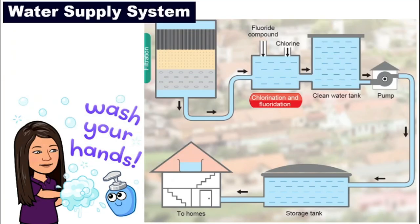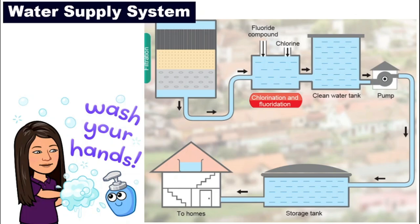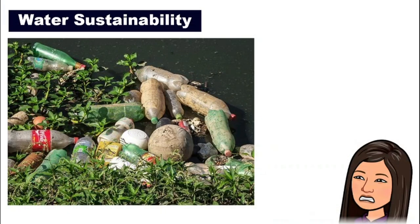After that, the water will be channeled into the clean water tank. At this point, the water is safe for us to consume and to use. It will then be pumped into the storage tank and distributed out to your homes for your daily use. So that's the whole water supply system, from water reservoir or rivers into your home. The next topic is quite serious and very important: it is water sustainability.